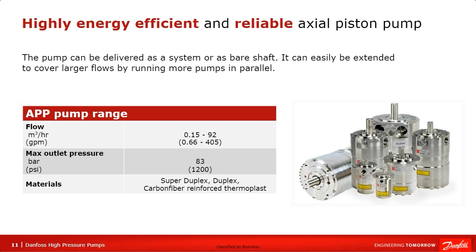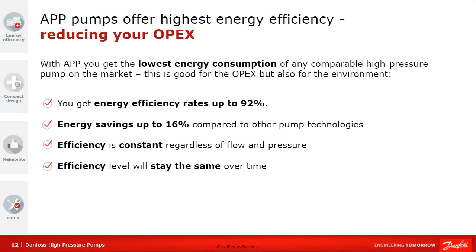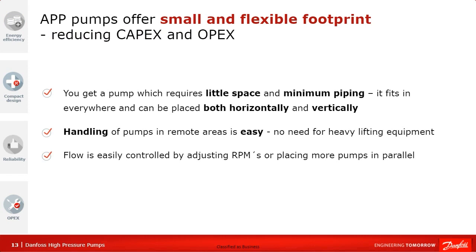The beauty of positive displacement pumps is that they are very efficient, which impacts OPEX for users — these pumps have the lowest energy consumption, resulting in significant savings compared to other technologies. With APP pumps you get efficiency rates up to 92%, which is up to 16% better than other pump technologies on the market. Positive displacement pumps control their flow through the RPMs of the motors, and the efficiency is constant regardless of what RPMs you operate at — you get proportional flow versus RPMs from the pump.